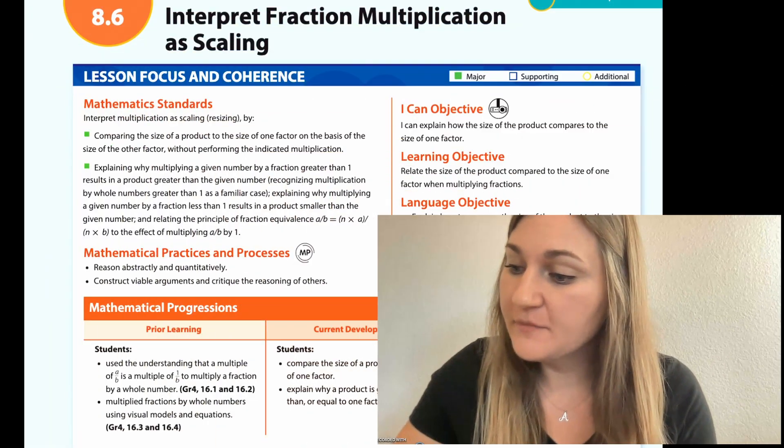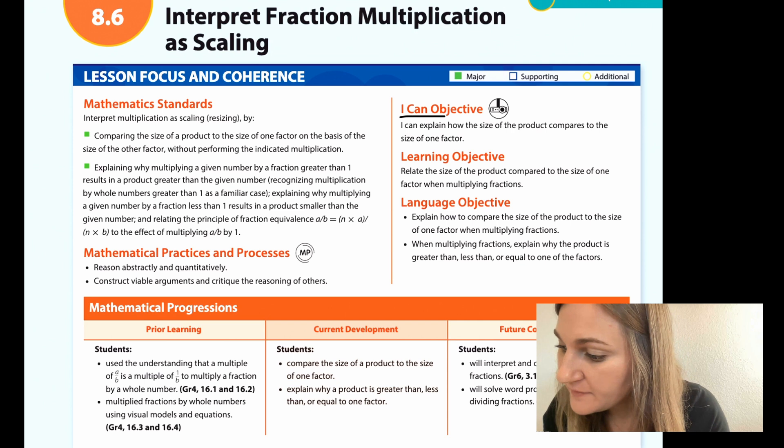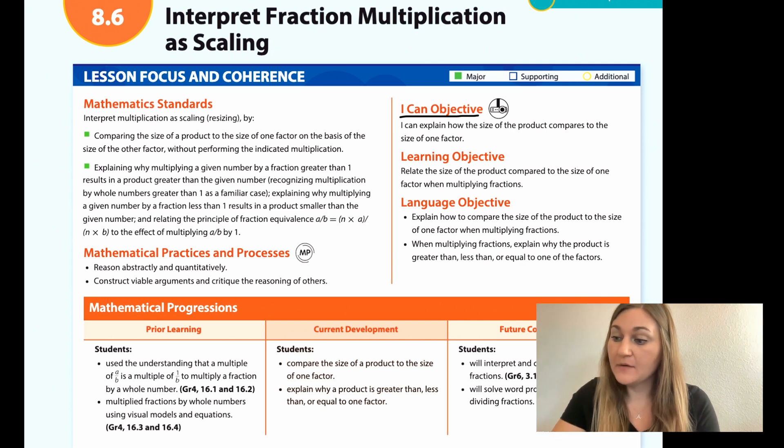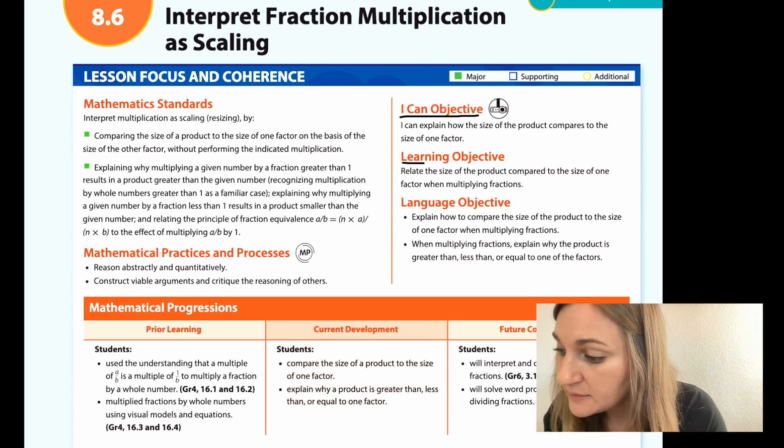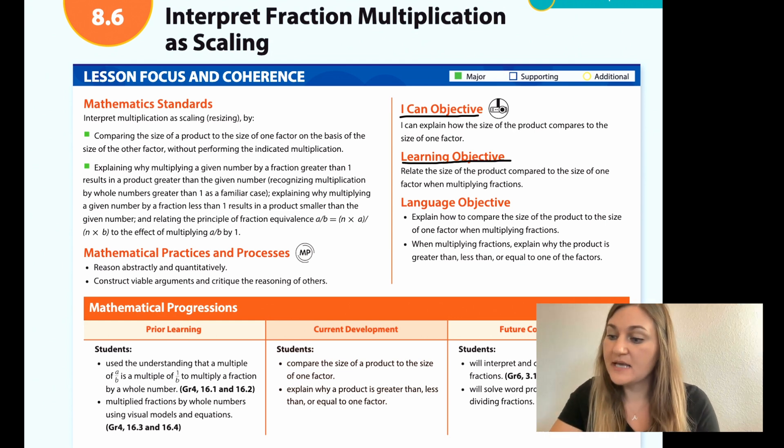Hi, I'm Natalie Rhodes and this is IntoMath fifth grade module 8 lesson 6. I'm going to start off by going over the I can objective so I can explain how the size of the product compares to the size of one factor. And the learning objective is to relate the size of the product compared to the size of one factor when multiplying fractions.